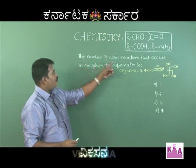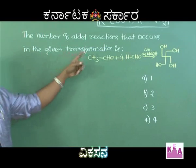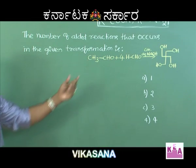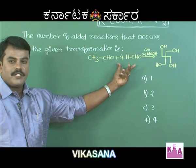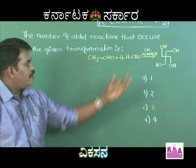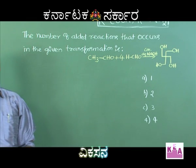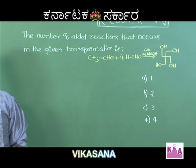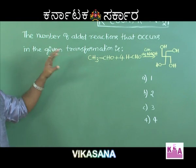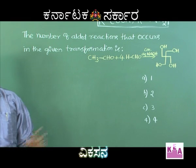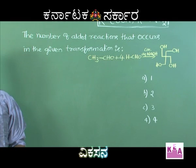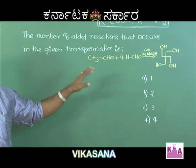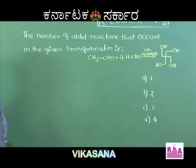The next question: the number of aldol reactions that occur in the given transformation is to be determined. Acetaldehyde reacts with four molecules of formaldehyde to give a specific compound. We need to find how many aldol reactions take place. This is a cross aldol reaction.